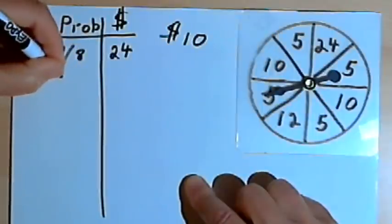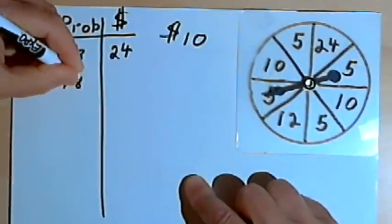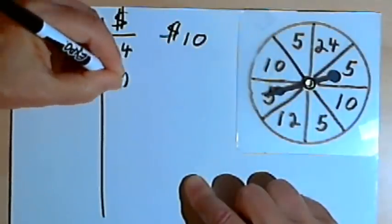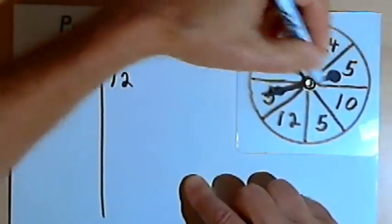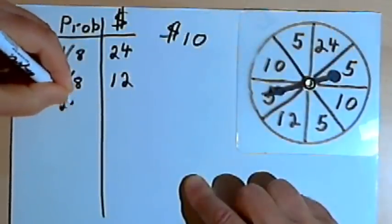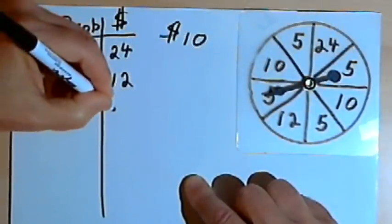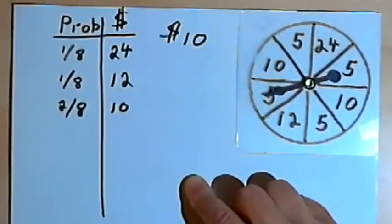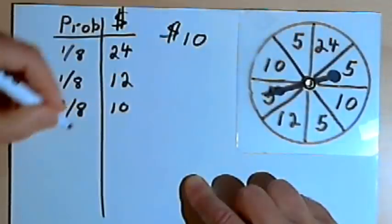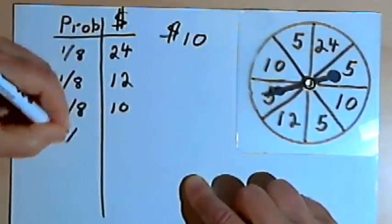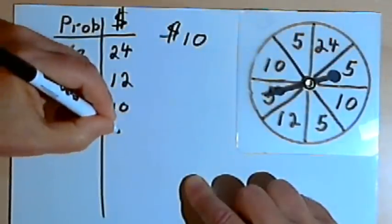And for one-eighth of the circle, you get 12 dollars back. For two of the sections, so that's two-eighths, you get 10 dollars back. And then for four of the sections, that's four-eighths, you get five dollars back.